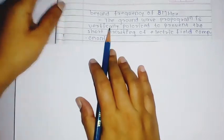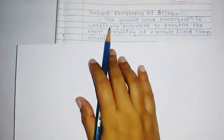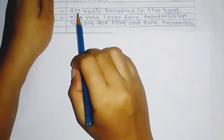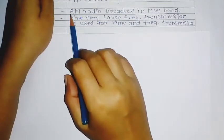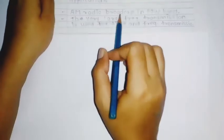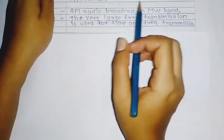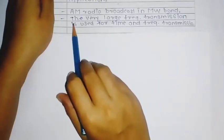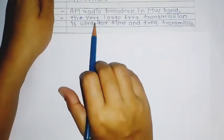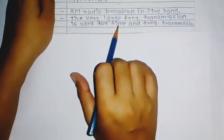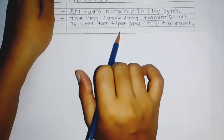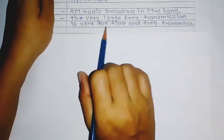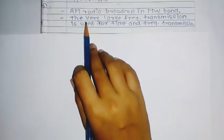The applications of ground wave propagation include: first, AM radio broadcast in the medium wave band; and second, very low frequency transmission used for time and frequency standard transmissions.